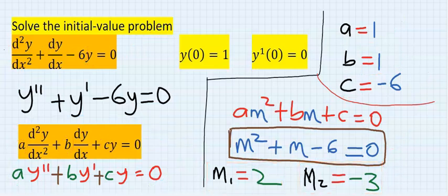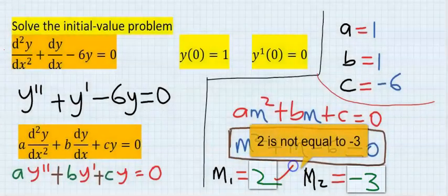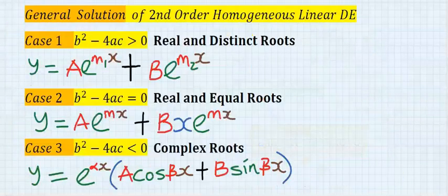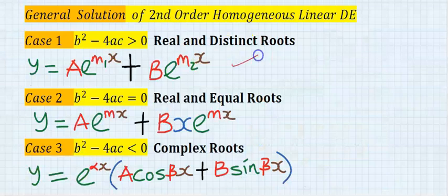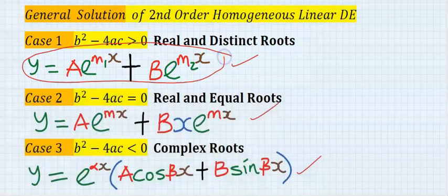Step number five: Introduce the general solution considering the root condition. Here, we have real and distinct roots because two is not equal to three. That means, from case one to three, I'm going to choose case one for real and distinct roots.